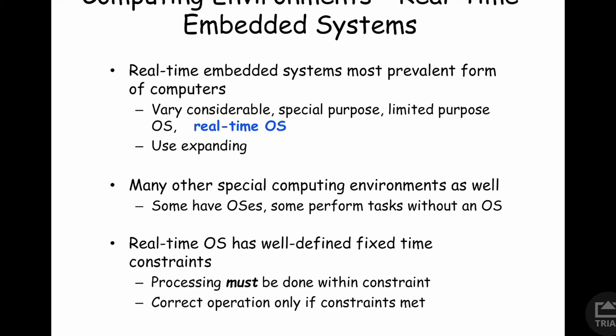Embedded and real-time systems are the most numerous types of operating systems. Your microwave has a processor running an OS. Your washing machine and dryer have processors running an OS. Complex fridges with touchscreens have processors running an OS. The average person has a few dozen processors involved in their daily existence — not even counting laptops and mobile devices. Modern automobiles have at least one to two dozen different processors for things like braking and engine control.